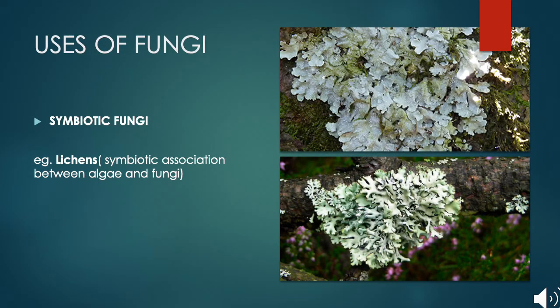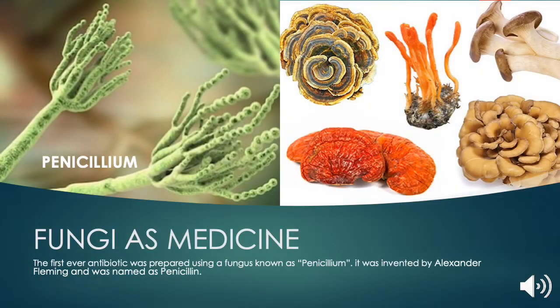There are also many symbiotic fungi — for example, lichens. A lichen is a symbiotic association between algae and fungi. Many fungi also have medicinal properties. The first ever antibiotic was produced using a fungus known as Penicillium. It was discovered by Alexander Fleming and the drug was named penicillin. There are many other fungi which also have medicinal properties and are used in the medicine industry.